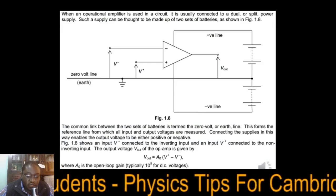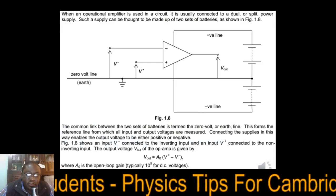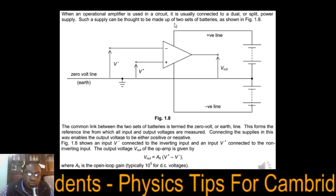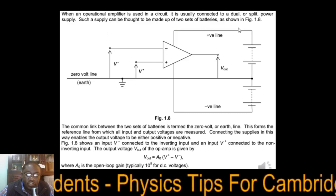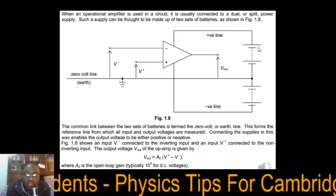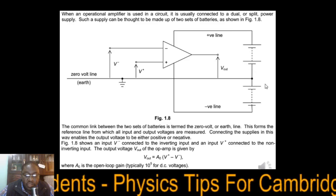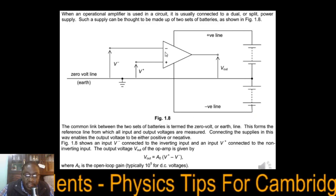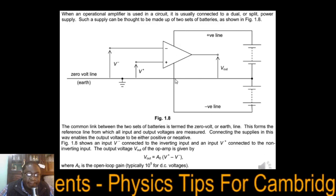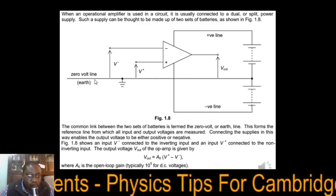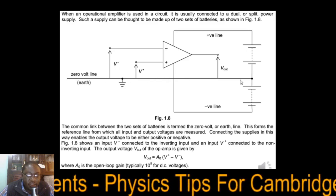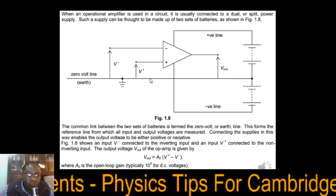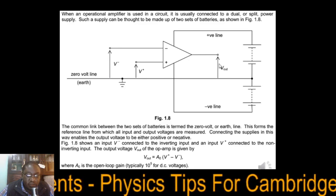When an operational amplifier is used in a circuit, it is usually connected to a dual or split power supply. Such a supply can be thought of as two sets of batteries — one positive part and one negative part. We have the positive line, the negative line, and the earth line. We measure V+ and V− as well as the output voltage with respect to zero volts.